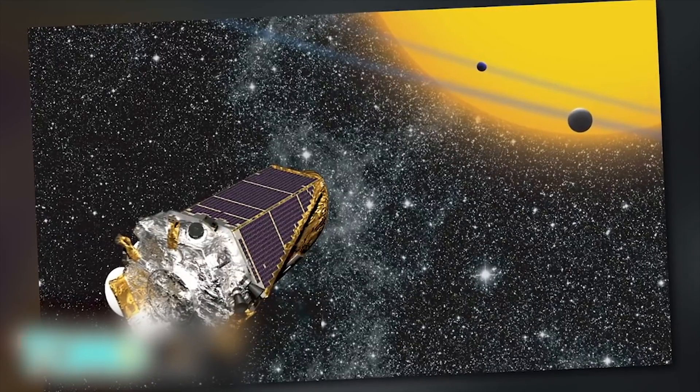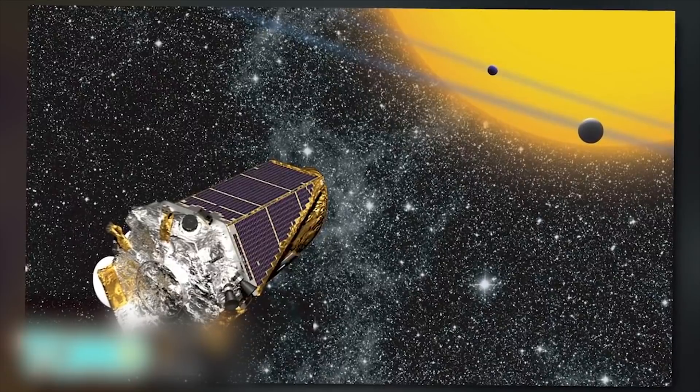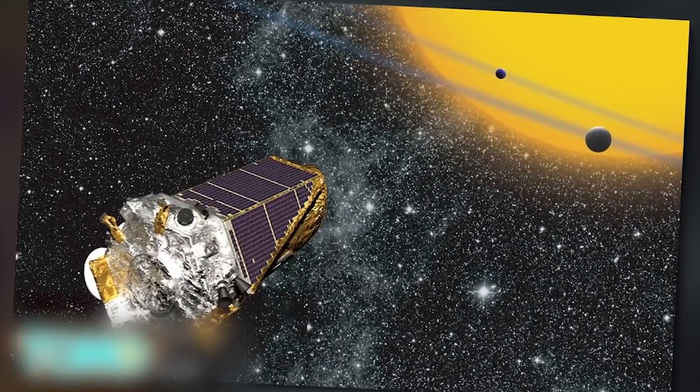Researchers pieced together a timeline of the sun's evolution by analyzing data from NASA's Kepler Space Telescope, which found stars resembling our sun.